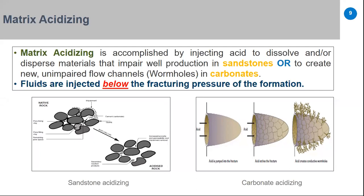In matrix acidizing, fluids are injected below the fracturing pressure of the formation. In sandstone, we have quartz grains, pore-filling clays, and pore-lining clays like kaolinite and illite, along with impairment from formation damage. The objective is to remove the clay and formation damage impairment. In carbonate acidizing, we end up with wormholes which increase conductivity toward the wellbore, and any damage can be dissolved within the wormhole itself.